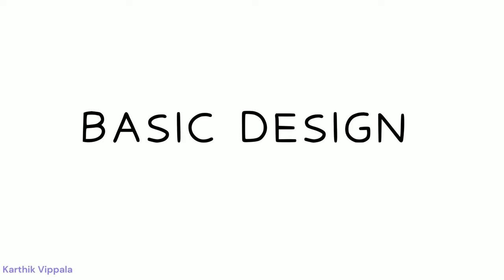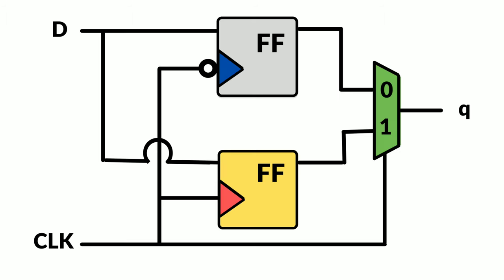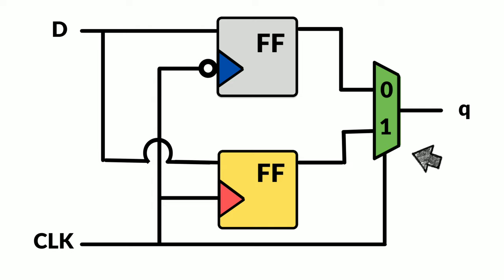To meet the functionality of dual edge trigger flip-flop, let's design a basic circuit with the flops and combinational logic known to us. We have two flops: one is negative edge triggered and another is positive edge triggered. Both outputs are connected to a MUX, and we have a select line connected to the clock. Whenever the clock is high, we get the output from the positive edge trigger flip-flop, and whenever the clock is low, we get the output from the negative edge trigger flip-flop.